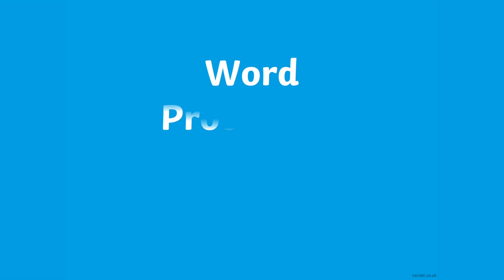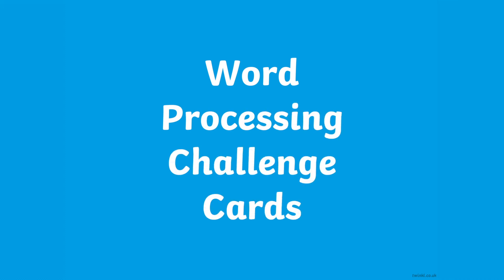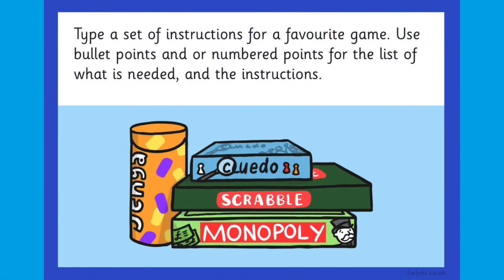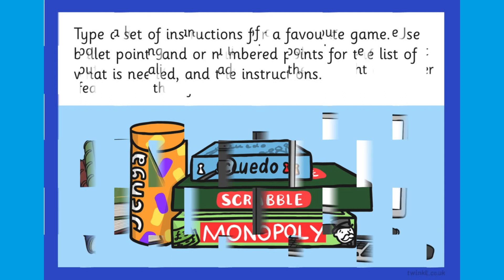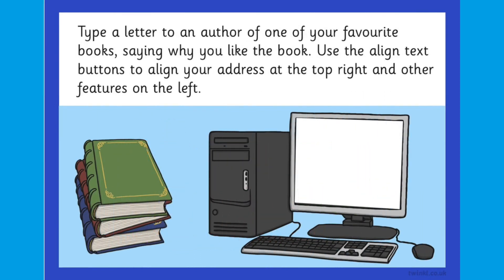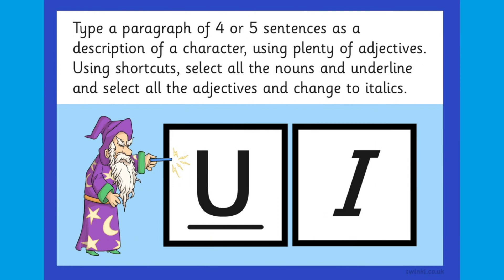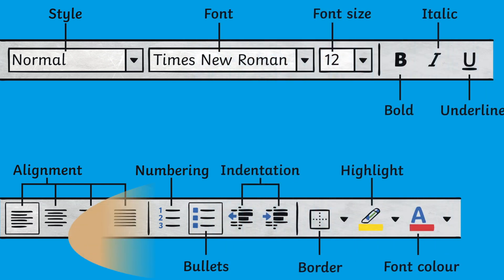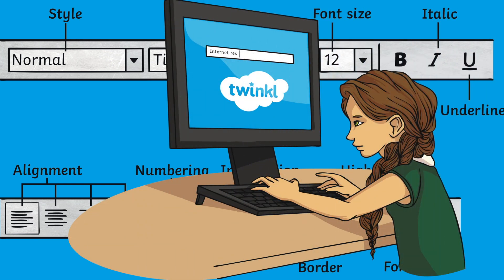Our word processing challenge cards are a fantastic way to really check that your child has embedded each concept. For example, this card checks whether children can use bullet points, this one is all about how to correctly align text, and this one encourages children to use shortcuts. No matter what level your child is currently working at, you can rest assured that working through Twinkle's word processing lessons will help them learn and develop lifelong computing skills.